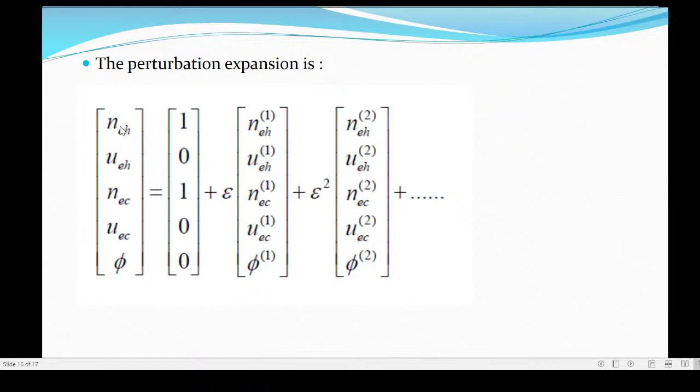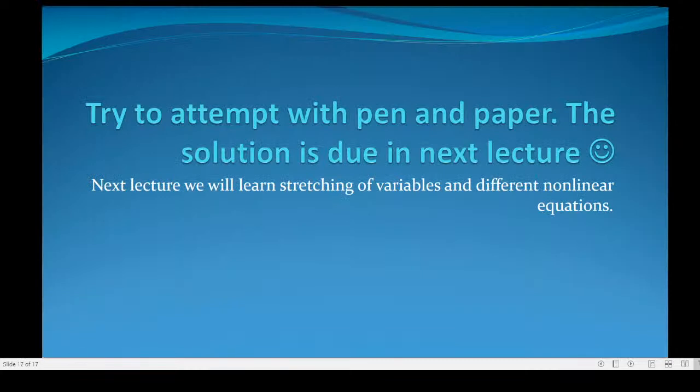I have written these equations - how many equations? 5 equations. The first equation goes like n_eh equals 1 plus epsilon n_eh1 plus epsilon square n_eh2. u_eh equals 0 plus epsilon u_eh1 plus epsilon square u_eh2, like this. There are 5 equations. While writing an article, writing 5 equations with 5 different numbers, it is a bit unsmart. So we write it like this. Try to attempt with pen and paper. The solution to the question we have asked here will be given in the next lecture.